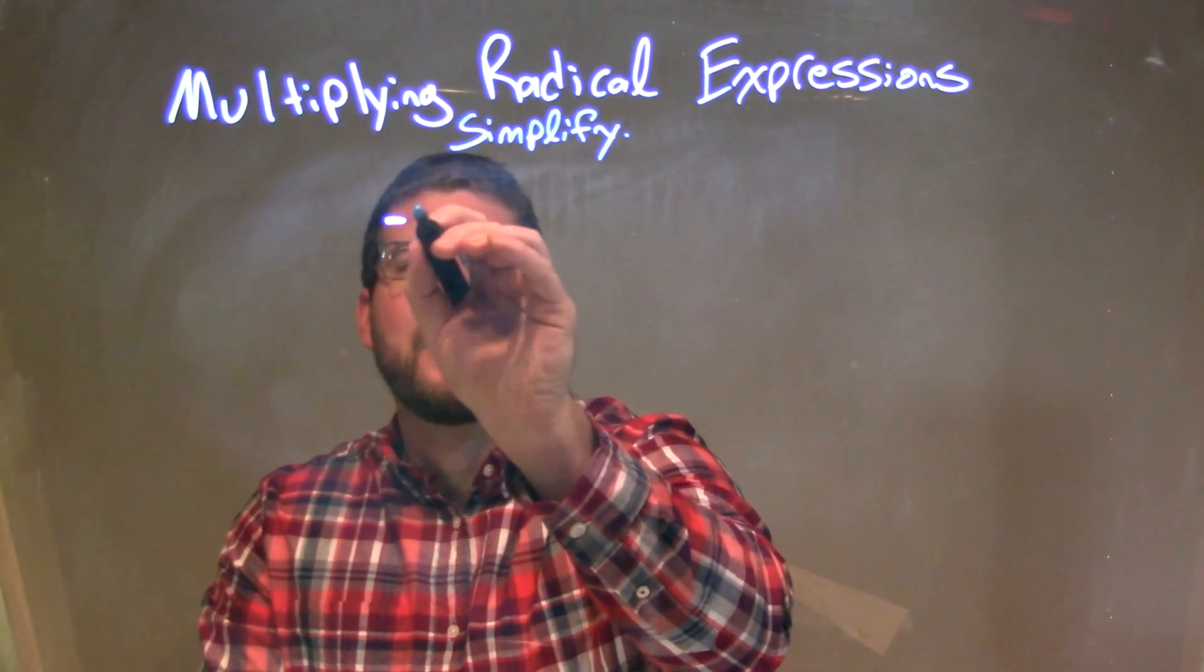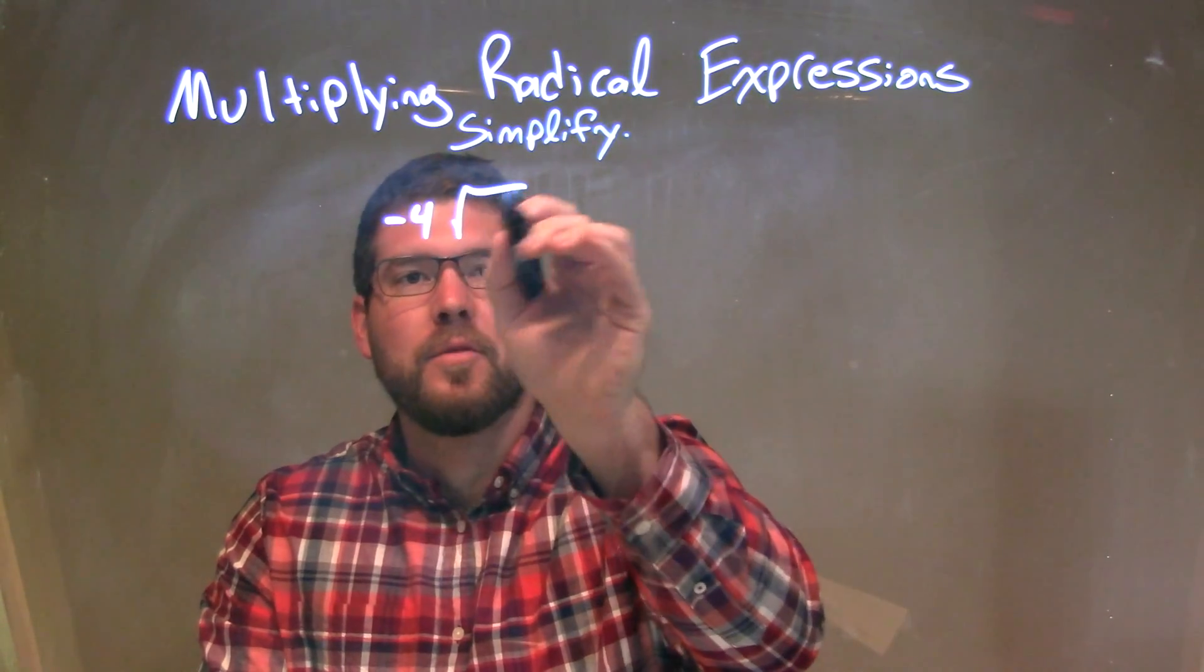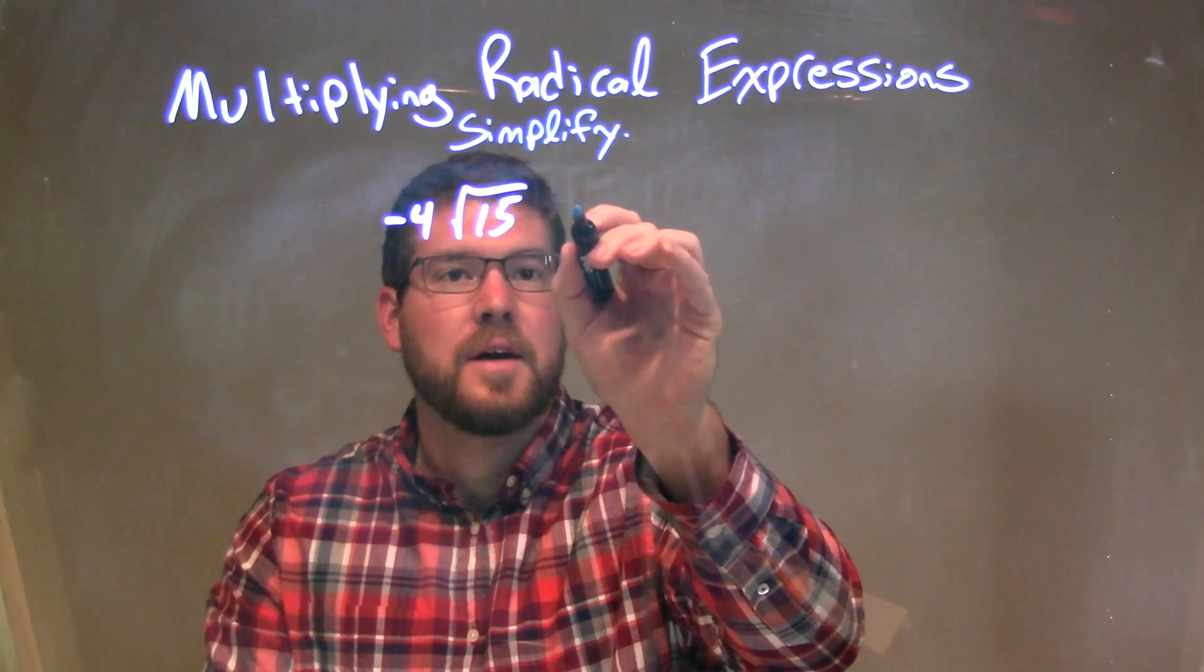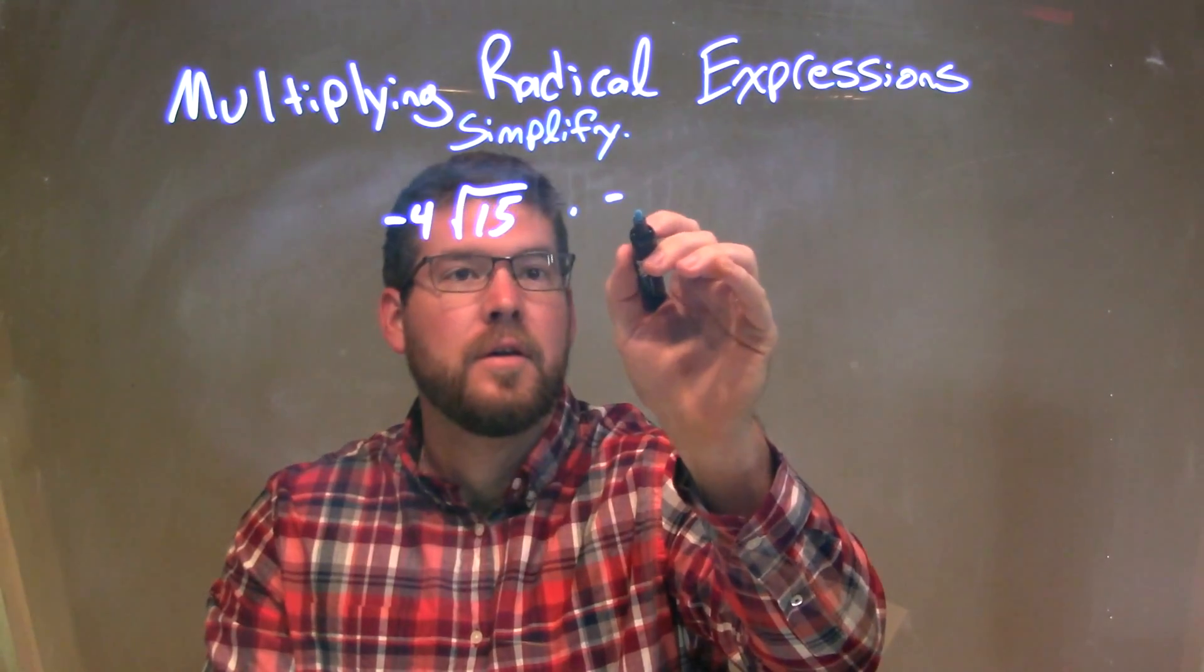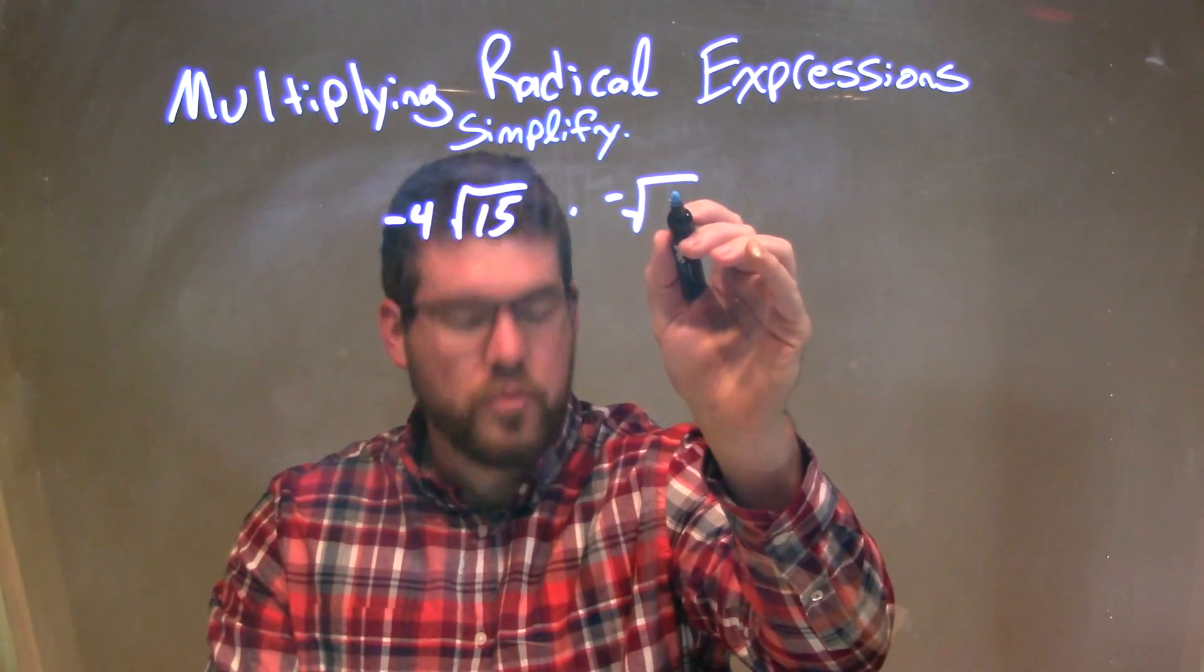So if I was given this expression, negative 4 times the square root of 15 times the negative square root of 3.